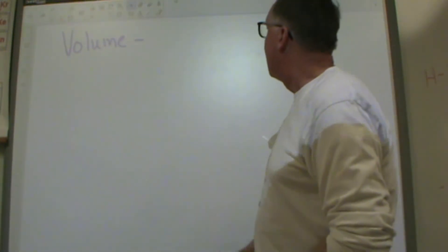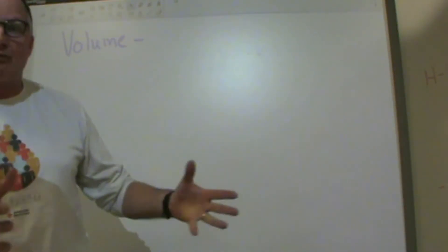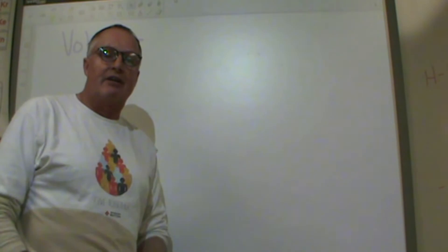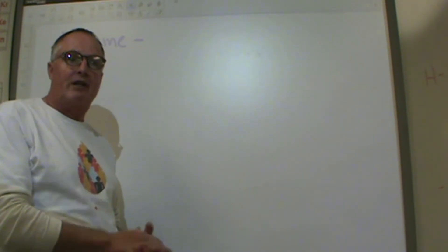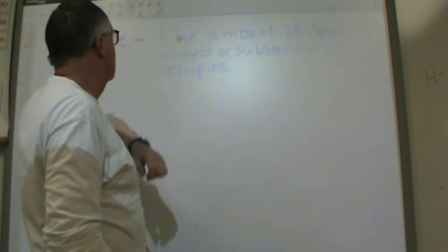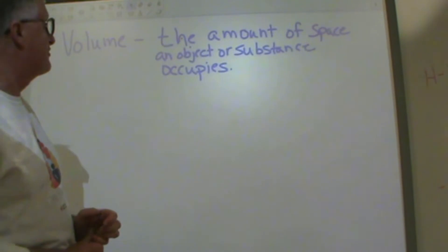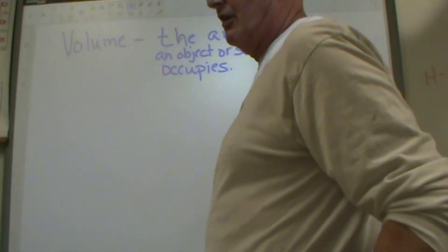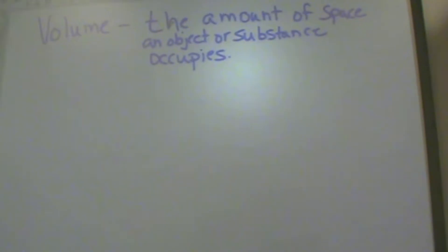So first of all, volume is one of those words that in English language we come up with a couple of different uses for. One, it's how loud something is - volume can be louder or it can be quieter. That's different, we'll study that later in the year when we talk about waves. But for this part, for the chemistry part, hopefully you can read that, the amount of space an object or substance occupies. Usually we talk about, and I'm just going to move this, get it out of the way and see if we can't get this easier for you to read.